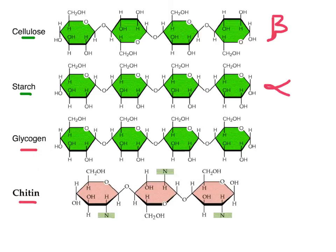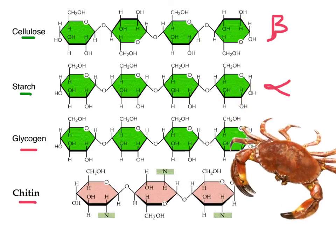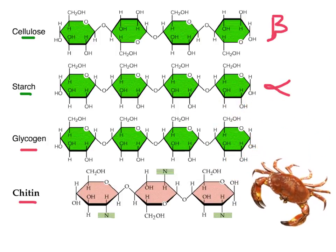Glycogen is sometimes called animal starch — it's what animals store glucose as after it's been in the bloodstream, a medium-term storage found in your liver. Chitin is very special — it has nitrogen groups tacked on instead of a hydroxyl group. Chitin forms the cell wall in all fungi and is also present in animals, particularly in the exoskeletons of invertebrates like crabs and arthropods such as insects. Those nitrogens act like hydroxyl groups forming hydrogen bonds between strands. Interestingly, chitin from shellfish can be reprocessed and used to make contact lenses — so some of you may actually be wearing chitin in your eyes.